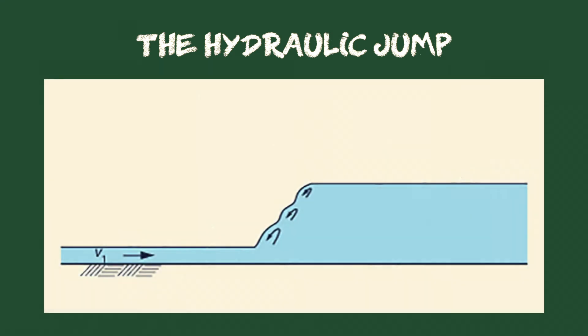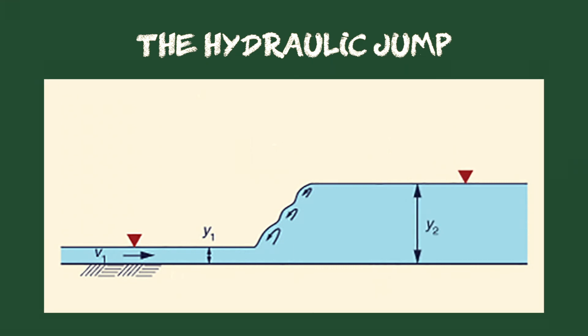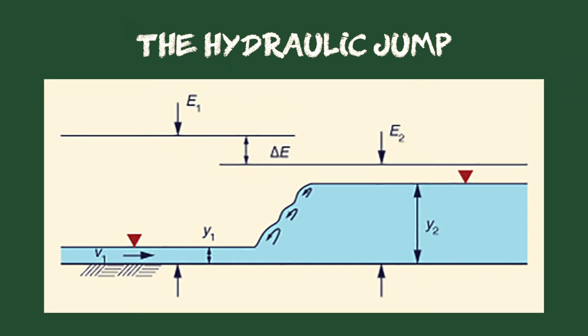The hydraulic jump is formed in a horizontal channel when the headwater condition is sufficiently low and the tailwater condition is sufficiently high. The hydraulic jump always occurs with a loss of energy.